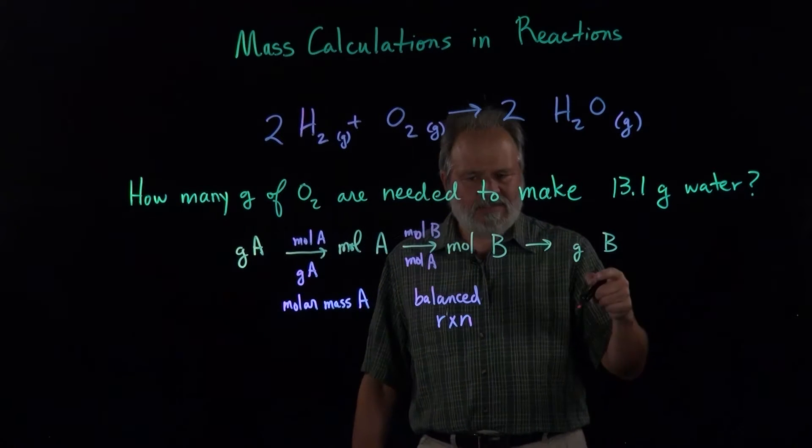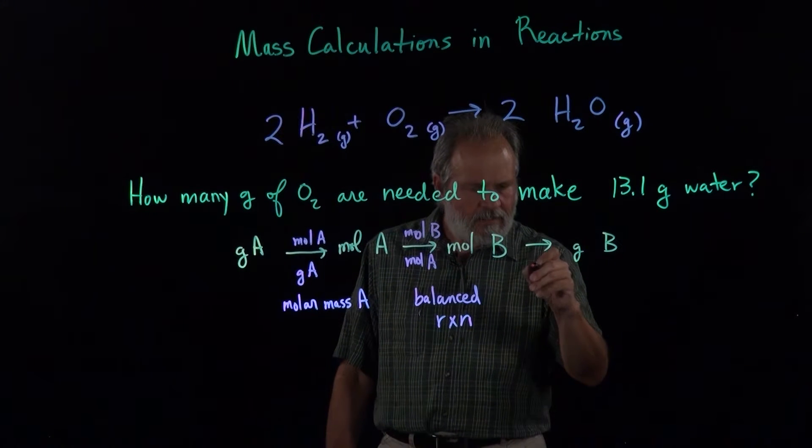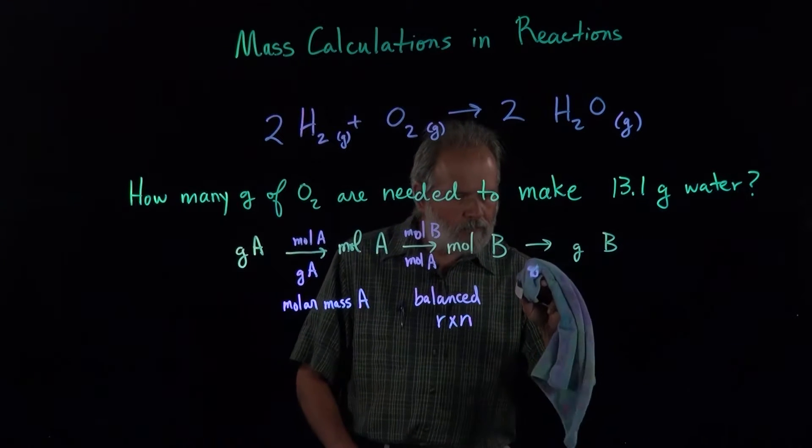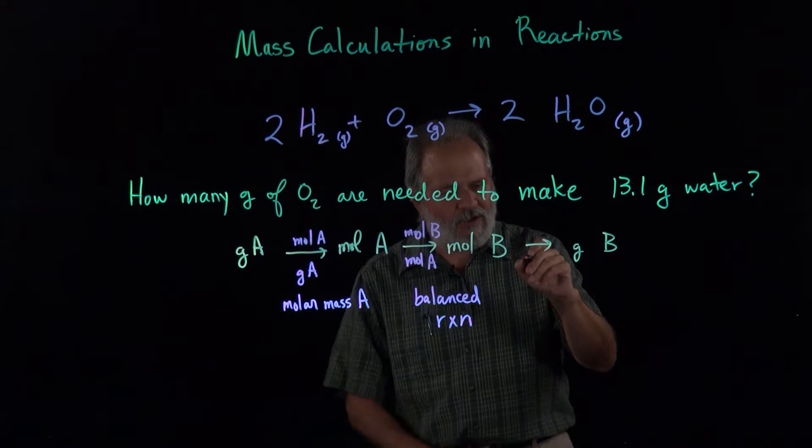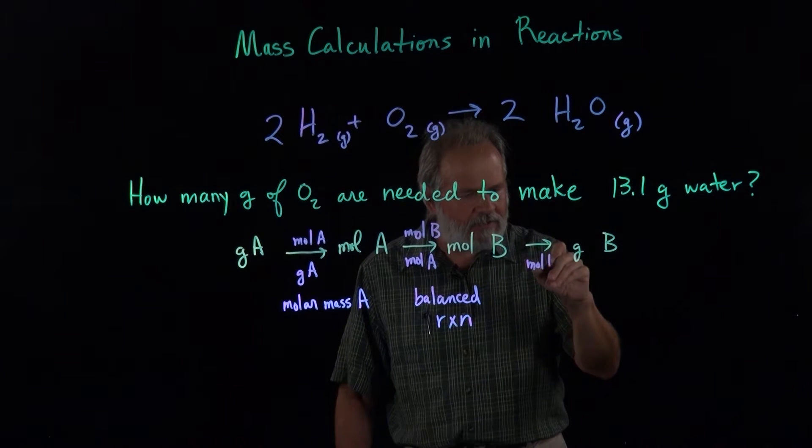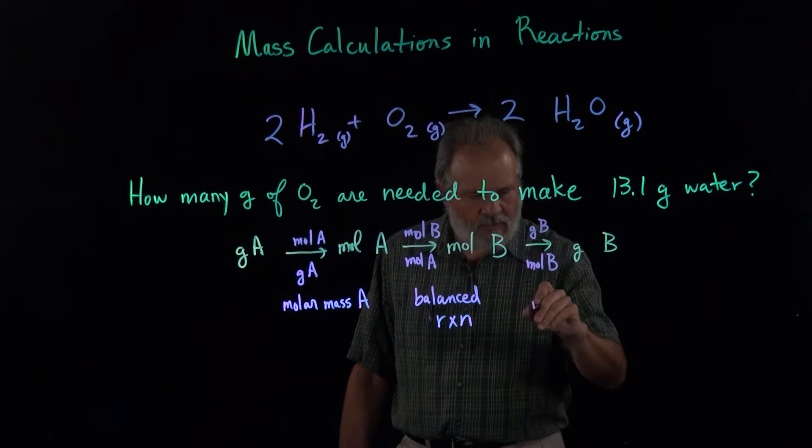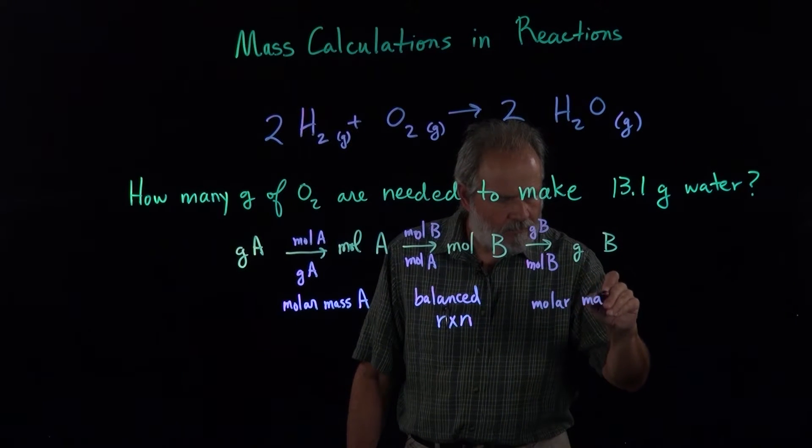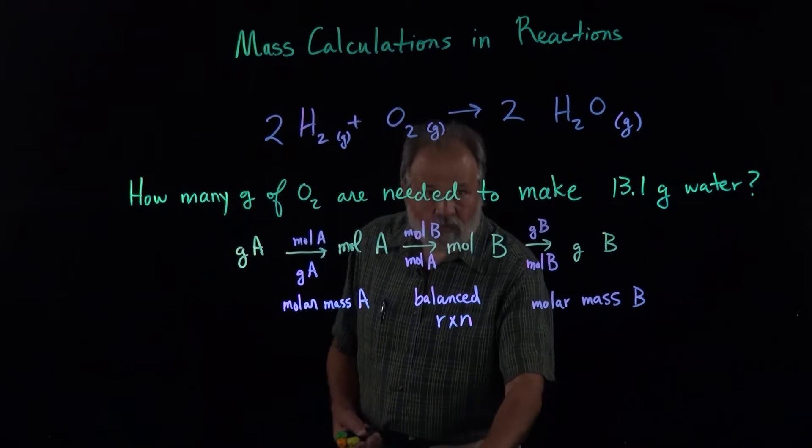And then finally, the molar mass will convert moles of B to grams of B. We want moles of B in the denominator here, and grams of B in the numerator. This is the molar mass of B. All right, so let's just work our example.